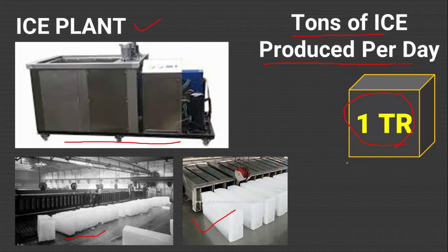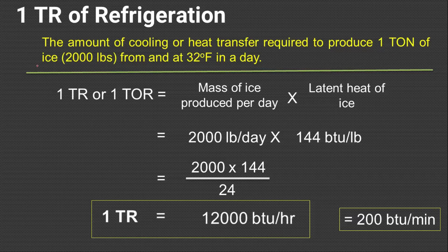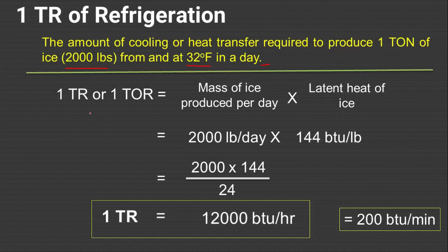Tons of refrigeration was introduced in the USA, and hence they defined it in terms of imperial units. One can define 1TR of refrigeration as the amount of cooling or heat transfer required to produce one short tonne of ice — which is 2,000 pounds, or precisely 907.2 kg — from and at 32 degrees Fahrenheit, or 0 degrees Celsius, in a day or in 24 hours. It is clearly a rate — a rate of cooling or rate of heat transfer. We quantify rate of heat transfer in terms of Watt or BTU per hour. BTU means British Thermal Unit. Let us calculate it.